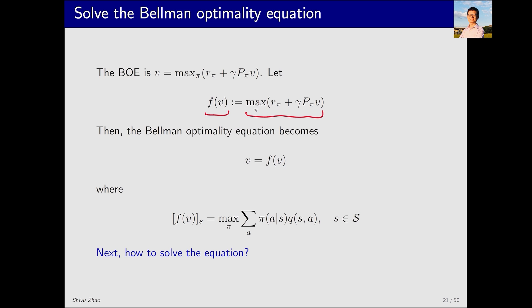Because the method for solving max pi is to first fix v, which allows us to determine a pi. As for what this pi looks like, we don't need to worry about that and we know that it is a function of v. Thus, the Bellman optimality equation becomes v equals f(v). How simple is this equation?